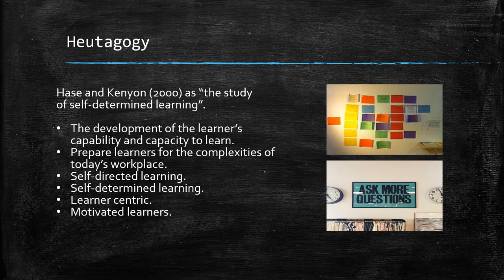The principles here are around self-determined learning. From the education standpoint, when we're developing or structuring a training program, the key is that it's learner-centred. We want to develop the learner's capability and capacity to learn — elements such as problem solving, self-determined, self-directed, motivated, independent adult learning principles. These are the components we're looking at when discussing and approaching the Heutagogy aspect.